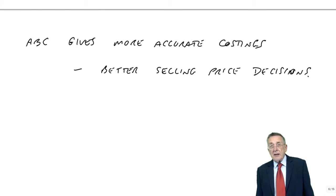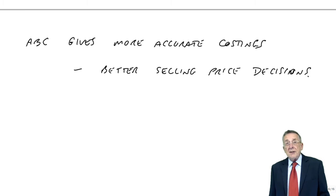the more accurate the costings we have, the better the selling price decisions will be. On activity-based, it's product C, which is selling too cheaply, not product A at all. So, I'll make better decisions about selling price.